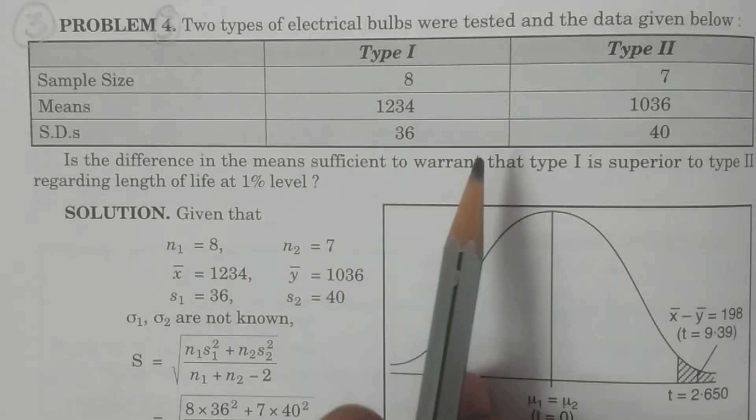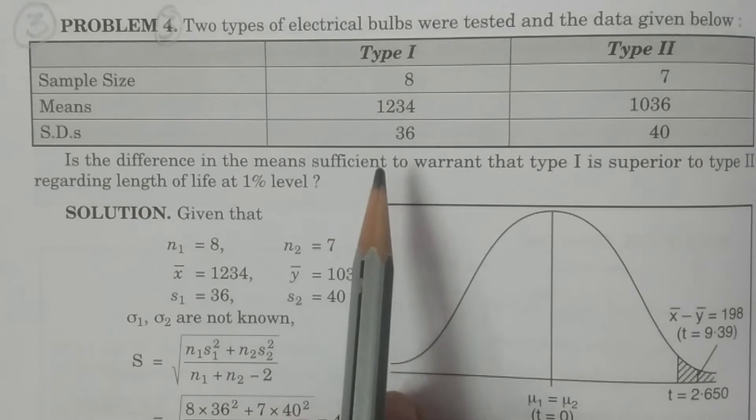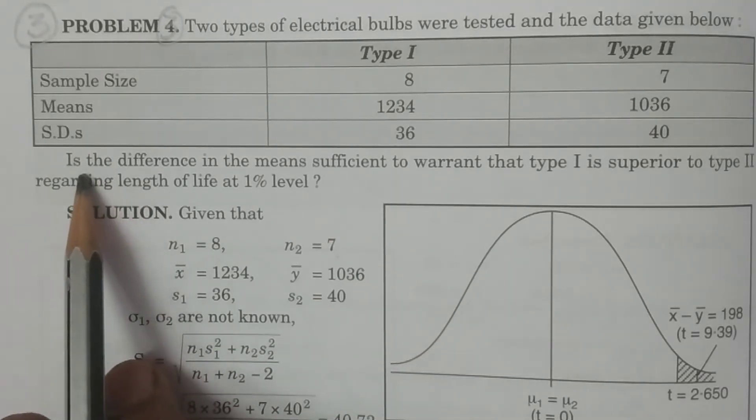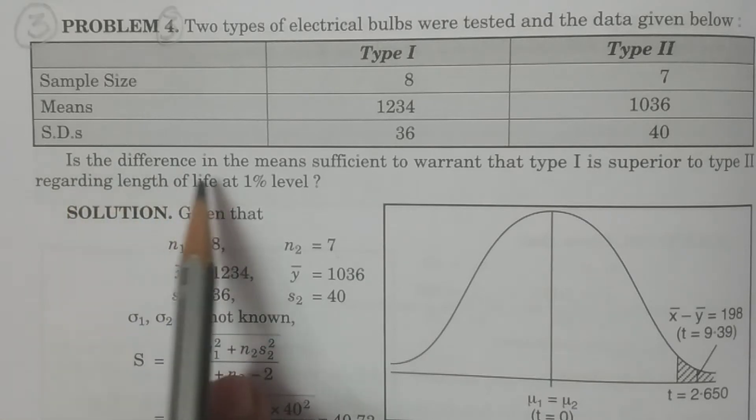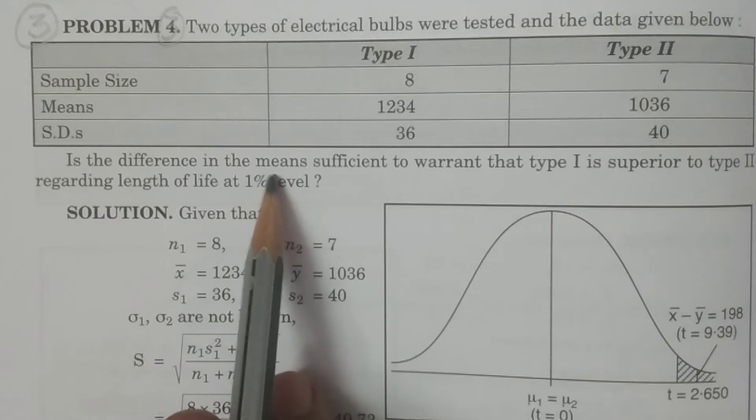Now you have to conduct the test, test for means. Why? Because the average lifetime is very important in this particular problem. So you see here the question: is the difference in the means sufficient? It is a problem of testing the means.